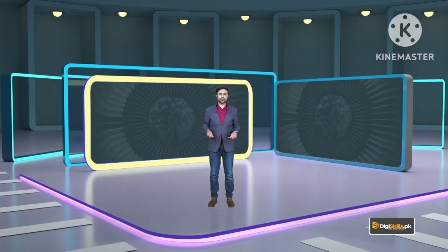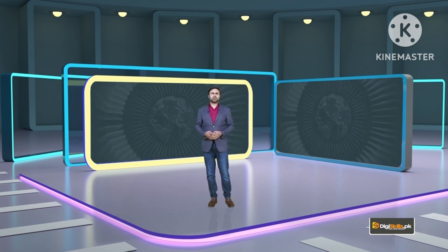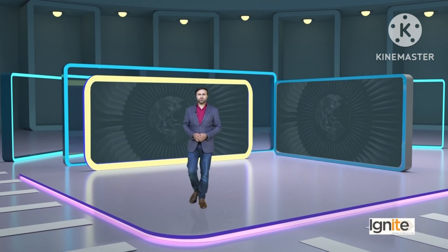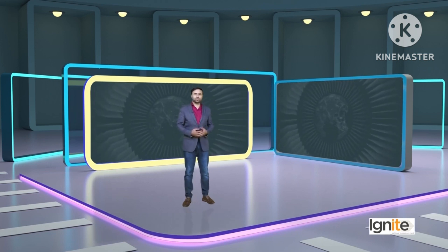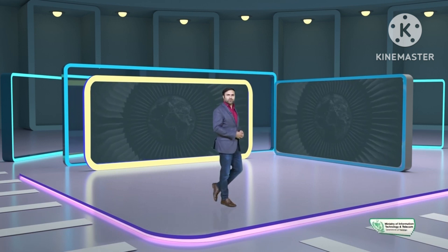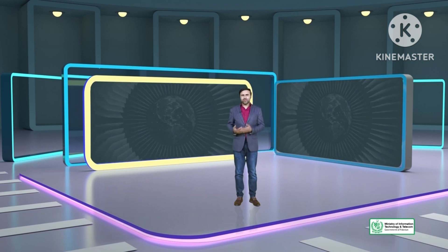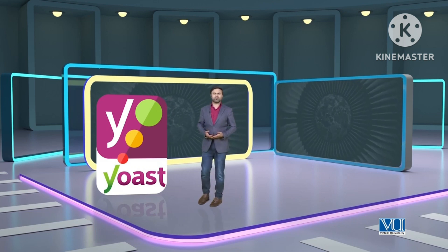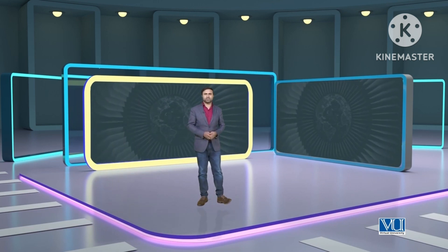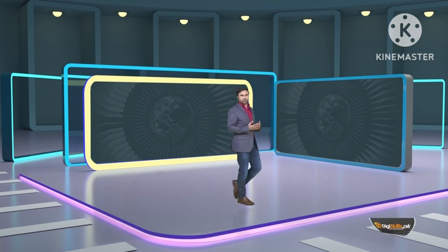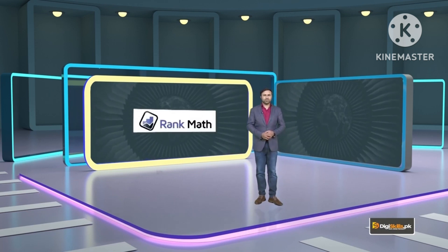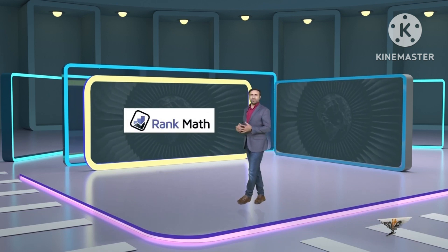दोस्तों, Content Writing के Lecture में हमने discuss किया था कि हमारा Content SEO Optimized होना चाहिए। तो हम कैसे check करेंगे कि हमारा Content या Page SEO Optimized है या नहीं? उसके लिए हम कुछ Tools का सहारा लेते हैं और उन Tools में WordPress के कुछ Plugins भी शामिल हैं। WordPress के दो Plugins बहुत ज़्यादा Popular हैं — पहला है Yoast, जो एक बहुत Popular, पुराना और Widely Used SEO Plugin है जो हमें Content की Quality, SEO Score, Readability Score और बहुत सारे SEO Options प्रोवाइड करता है।